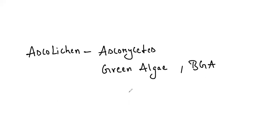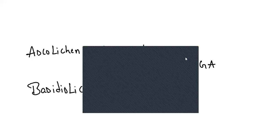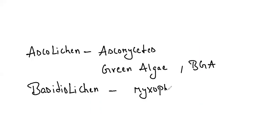We also have Basidiolichens, where the algal partner is myxophyceae, which is blue-green algae. An example of Basidiolichen is Cora pavonia.